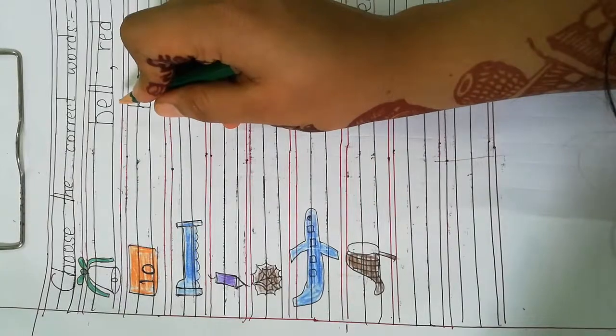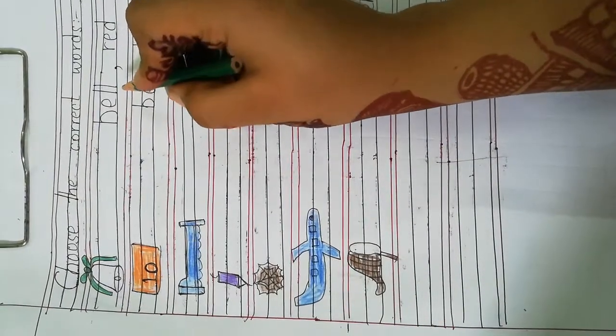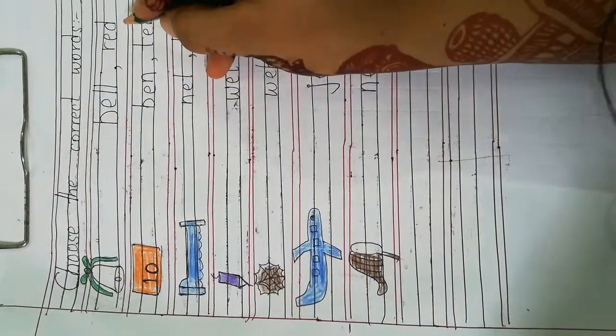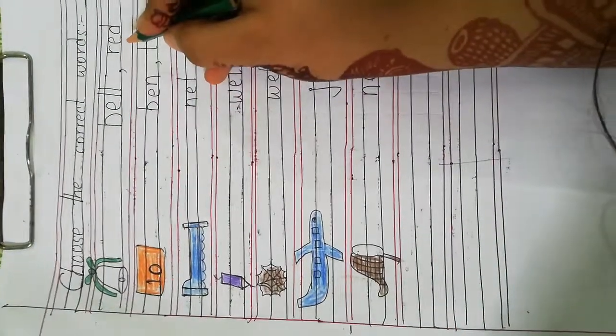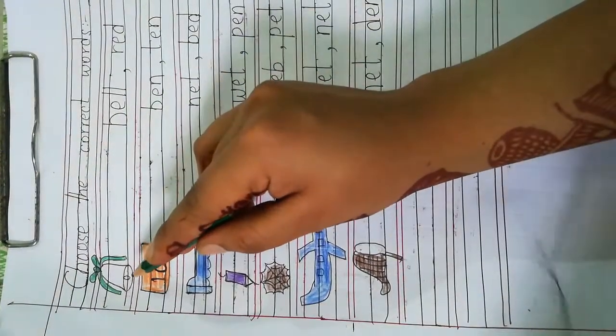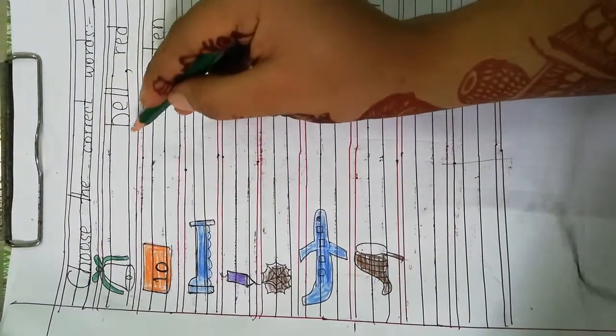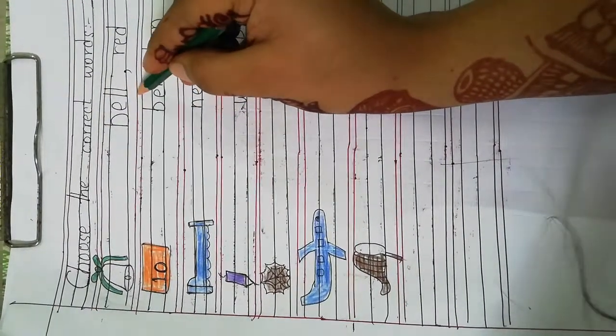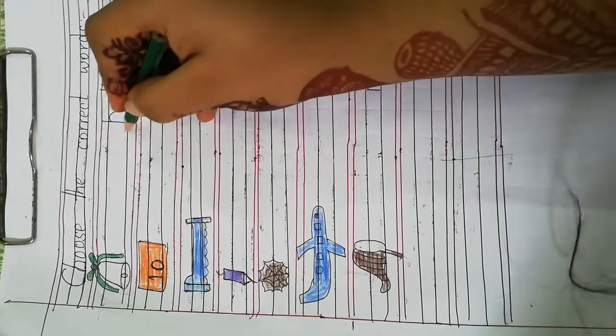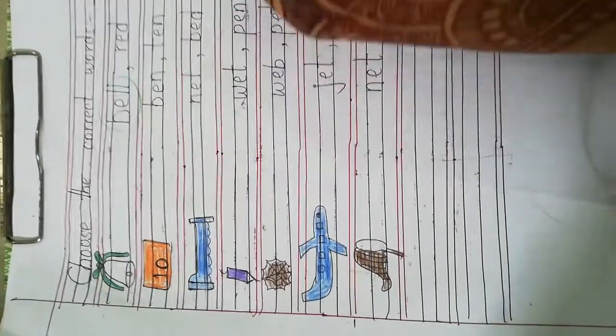B E double L bell. R E D red. Bell red. This is bell. So, we will circle this word. B E double L.